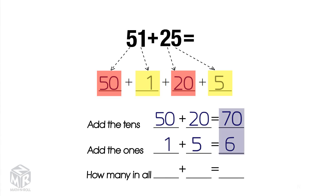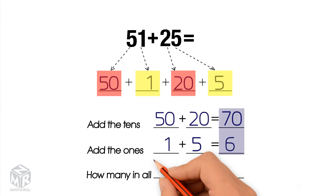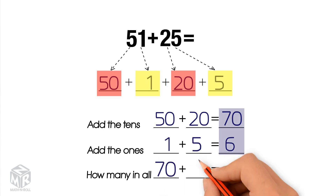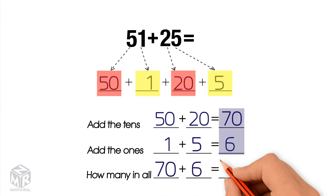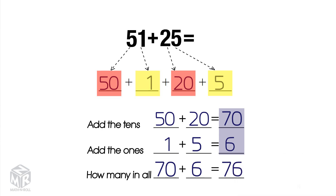Finally, we add them together: 70 plus 6 equals 76. So 51 plus 25 equals 76.